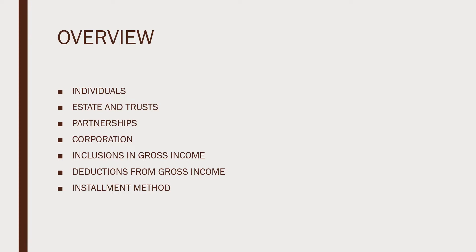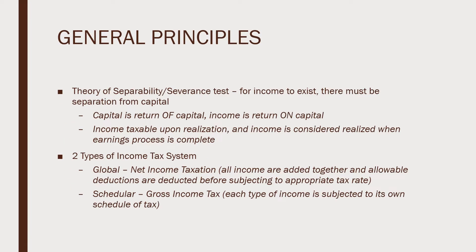I would like to differentiate capital from income. The theory of separability or severance test says that for income to exist, there must be separation from capital. Capital is a return of capital while income is the return on capital. Income is taxable upon realization and is considered realized when the earnings process is already complete. When the business is selling goods, we apply the actual basis of accounting, but if providing services, we use the cash basis. There are also two types of income tax systems: the global tax system and the scheduler tax system.